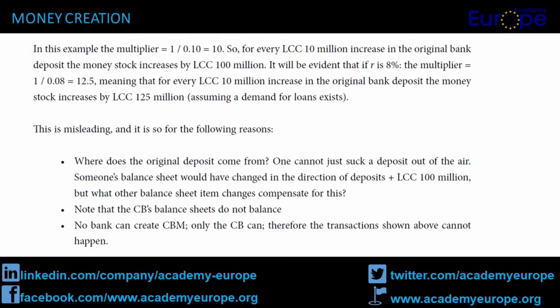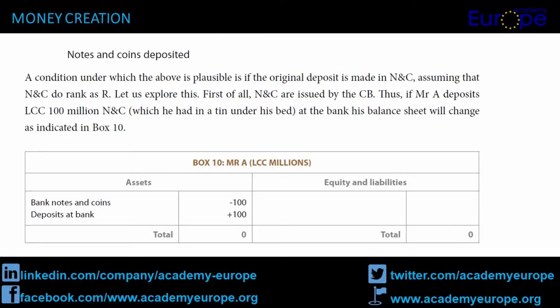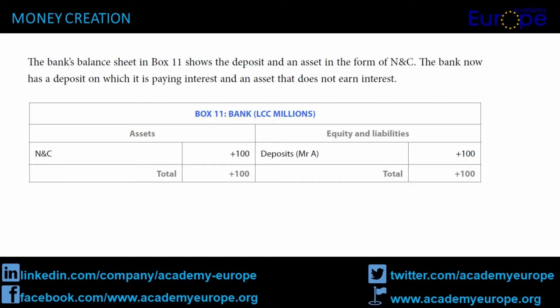This is misleading, and it is so for the following reasons. Where does the original deposit come from? One cannot just suck a deposit out of the air. Someone's balance sheet would have changed in the direction of deposits +LCC 100 million. But what other balance sheet item changes compensate for this? Note that the CB's balance sheets do not balance. No bank can create CBM; only the CB can. Therefore the transactions shown above cannot happen. A condition under which the above is plausible is if the original deposit is made in NNC, assuming that NNC do rank as R. Let us explore this. First of all, NNC are issued by the CB. Thus, if Mr. A deposits LCC 100 million NNC which he had in a tin under his bed at the bank, his balance sheet will change as indicated in Box 10. The bank's balance sheet in Box 11 shows the deposit and an asset in the form of NNC.